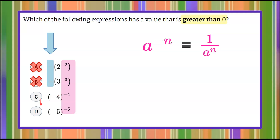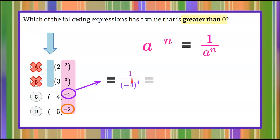That leaves me C and D to pick from. When I look at these powers, I need to understand how to rewrite them — they're both a negative exponent. Let's look at the first one. We have negative 4 to the negative 4. Our base is negative 4, our exponent is negative 4. We're going to rewrite this to be 1 all over our power with a positive exponent.